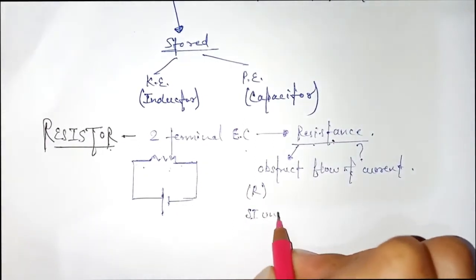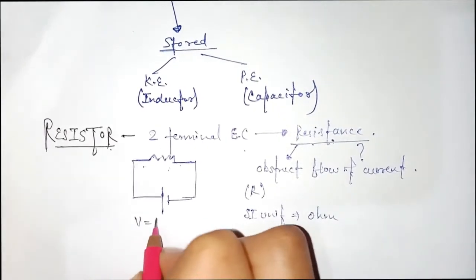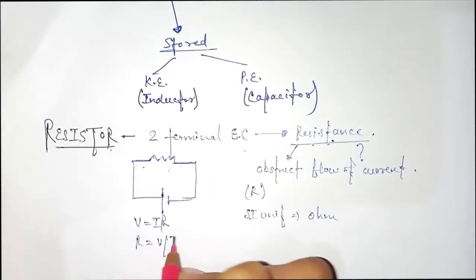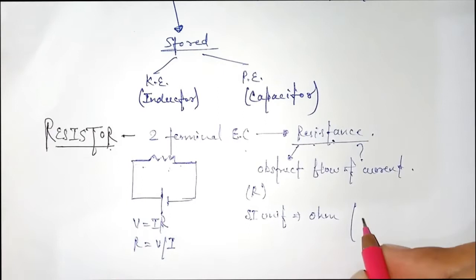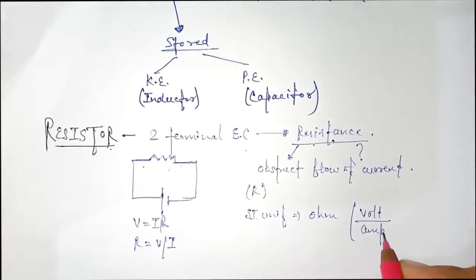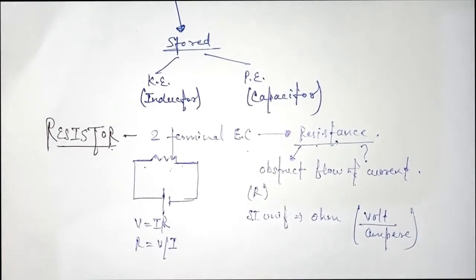Its SI unit is ohm. From Ohm's law, V is equal to IR. As we know, R is equal to V by I. From here the unit is volt for V, ampere for I. So SI unit is ohm, other unit is volt per ampere.